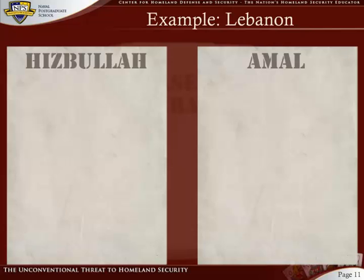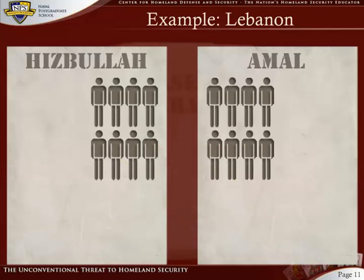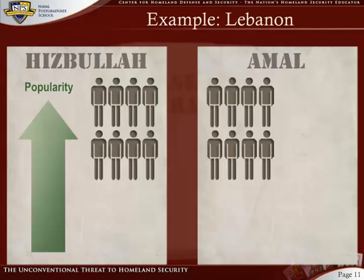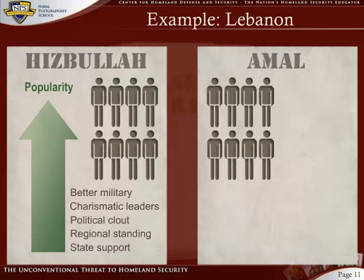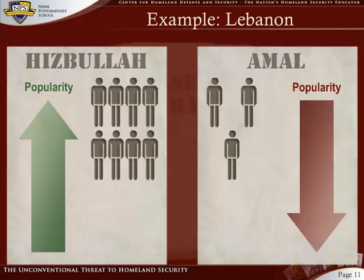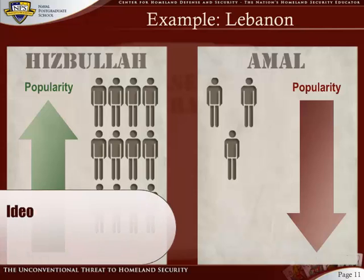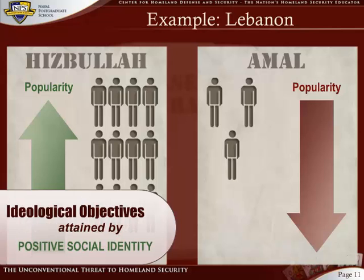Let's illustrate the complexities of intergroup relations with a case study from Lebanon. During the late 1980s and early 1990s, the subnational groups Hezbollah and Amal were competing for the Lebanese Shia constituency. Hezbollah's popularity increased as it acquired better military capabilities, more charismatic leadership, political clout, regional standing, and state support. Meanwhile, Amal's insufficiencies in these areas eroded their membership, while more and more people joined the ranks of Hezbollah. This is a clear illustration of a group's survival depending on its ability to supply members with a positively valued social identity.